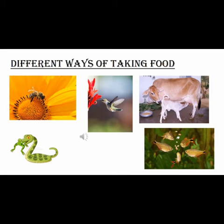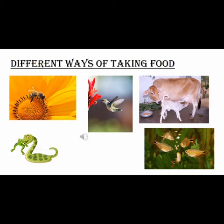Here we will learn about the different ways of taking food. Not every organism depends on plants, and not every organism depends on animals - there are various ways of consuming food. As you can see in this slide, bees are sucking nectar from flowers, and the hummingbird is also sucking nectar from flowers. Nectar is that sweet liquid found inside flowers. Bees and hummingbirds usually suck nectar, and bees in particular store this nectar in the form of honey.